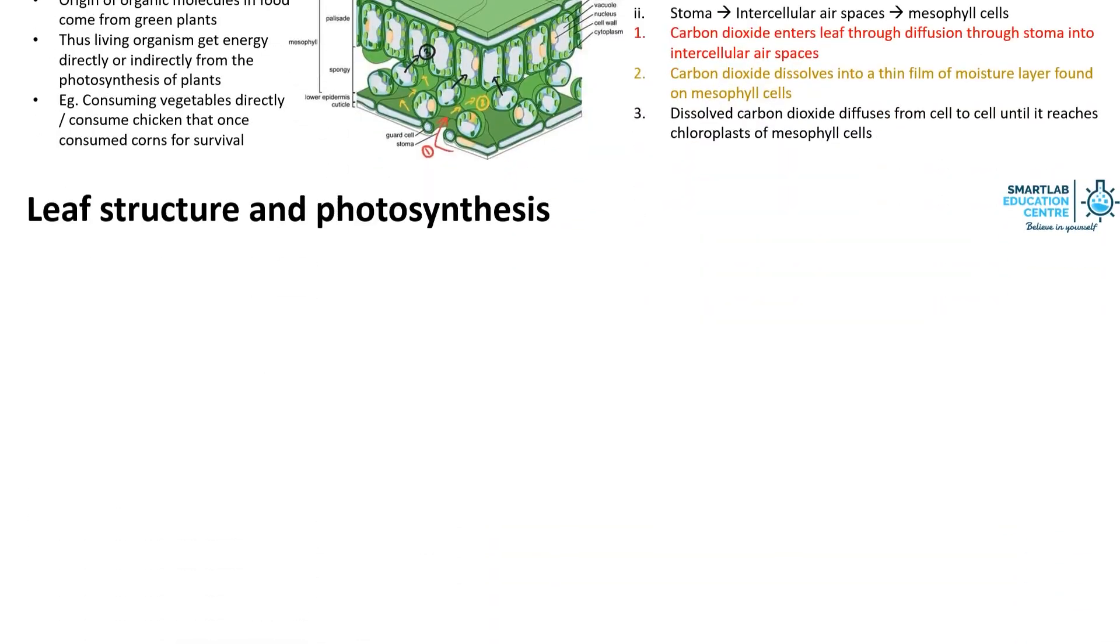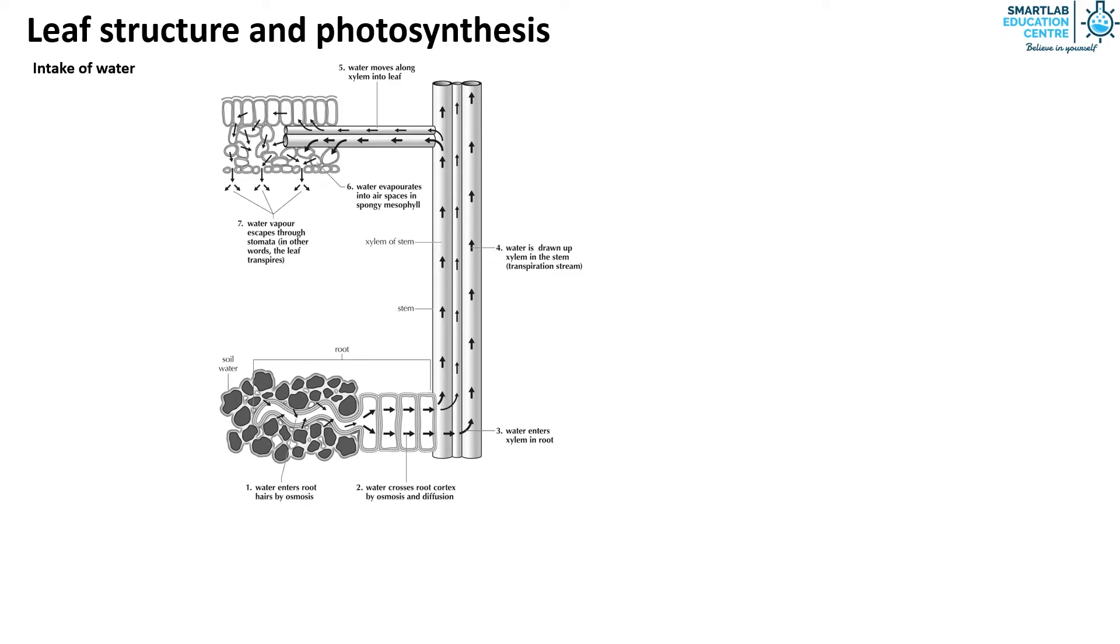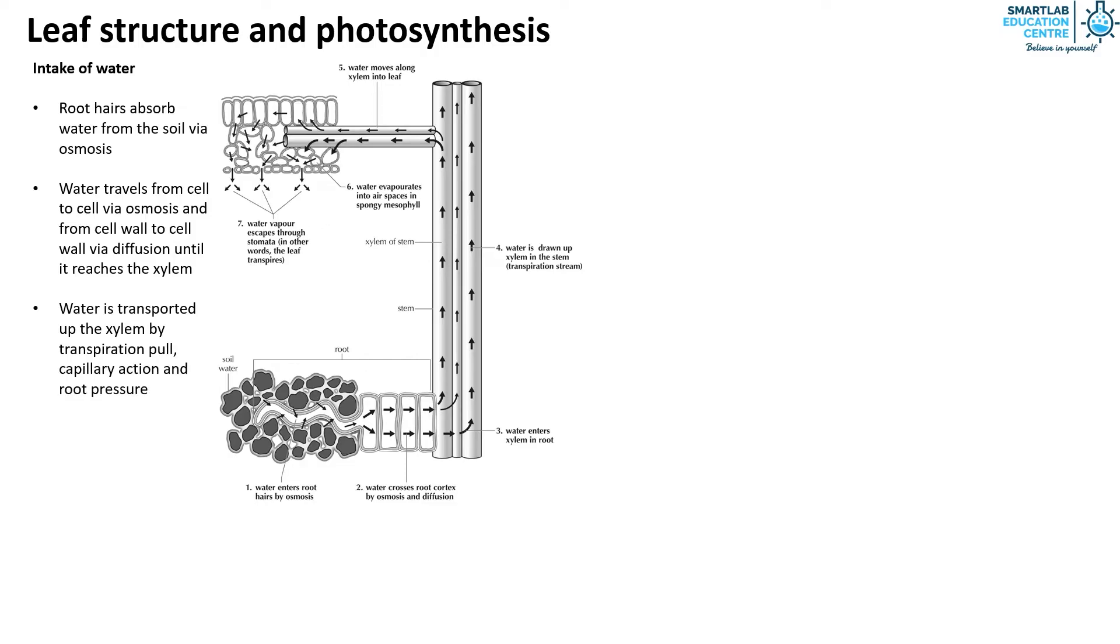Second, we will look at how plants take in water. The root hair cells will absorb water from the soil via osmosis. Water travels from cell to cell via osmosis and from cell wall to cell wall via diffusion until it reaches the xylem. Water is then transported up the xylem by transpiration pull, capillary action and root pressure. Water then moves into the mesophyll cells and leaves in response to an osmotic gradient.